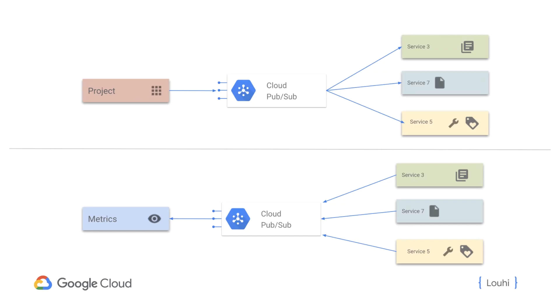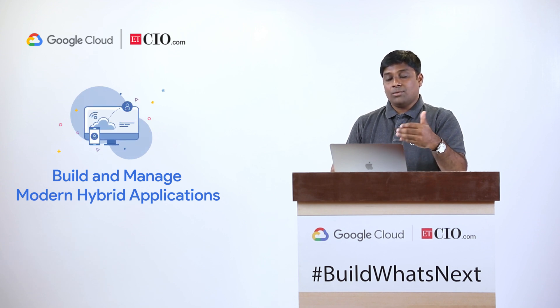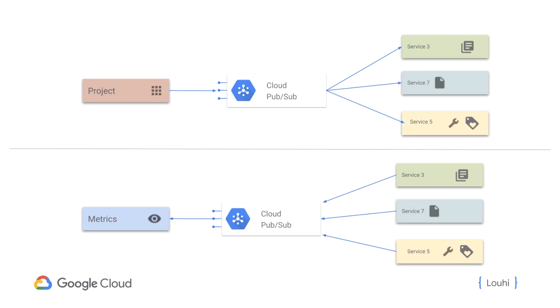In the case of project deletion, we used a fan-out approach: when a project gets deleted, the event is consumed by other services which take respective actions — for example, the notification service removes all pending notifications, the trigger service removes scheduled triggers, and so on. In the case of the metric service, we used fan-in, where it listens to multiple service changes and based on that computes certain metrics that need to be made available for end users to track.